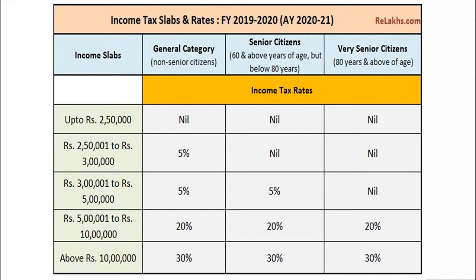For an individual assessee whose age is less than 60 years: up to 2,50,000 rupees is exempt. From 2,50,000 to 3 lakh it is taxable at 5%. From 3,00,001 to 5 lakh it is taxable at 20%. From 5 lakh to 10 lakh it is 20% — sorry, it is 10% — sorry, 5%. Above 10 lakh rupees it is 30%.